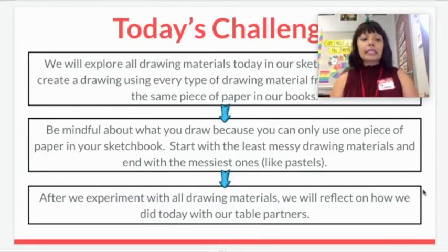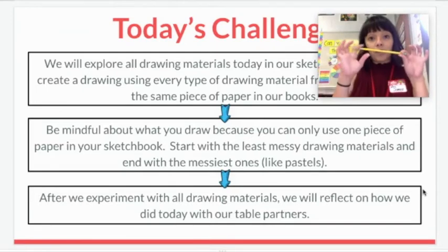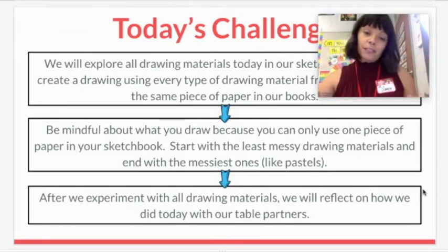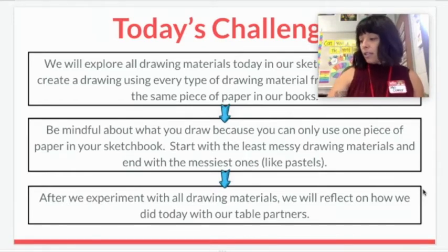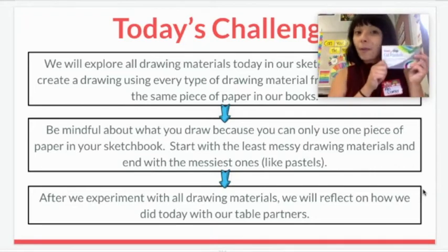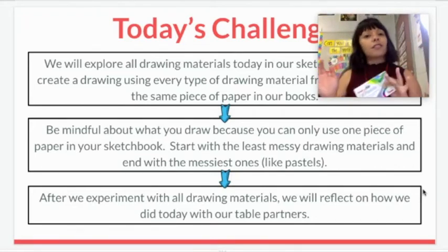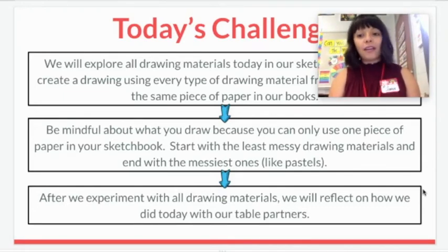Part of the challenge is combining techniques you're playing around with and discovering, all on the same paper. So be mindful about what you draw because you only have that one piece of paper in your sketchbook to use today. Start with the least messy items — for instance, start with a regular pencil, then move to a pen, and at the very end if you have something messy like oil pastels, use those last. It's always good to start with the least messy and end with the super messy. Then after we experiment, we're going to reflect on how we did.